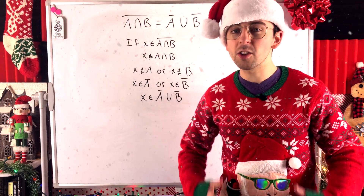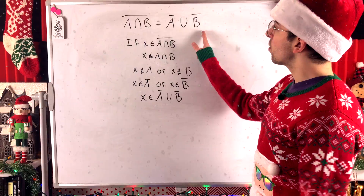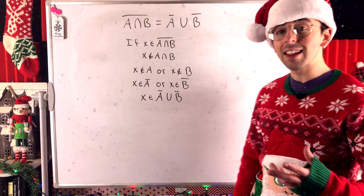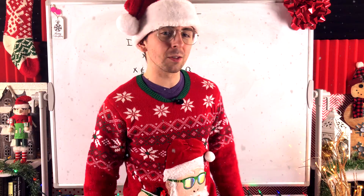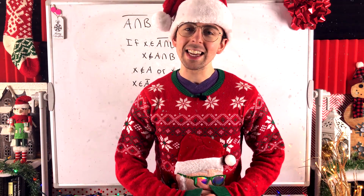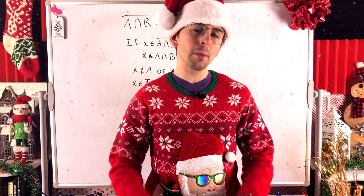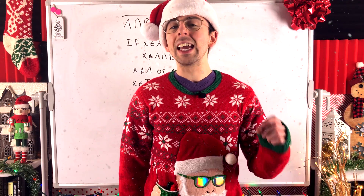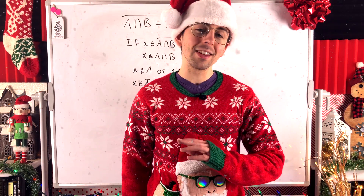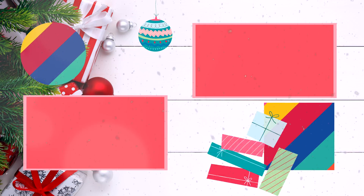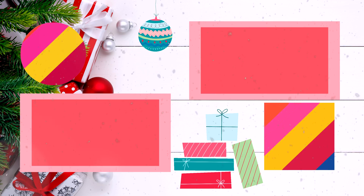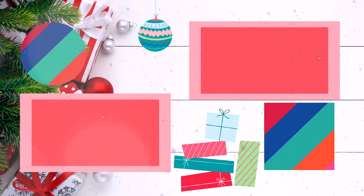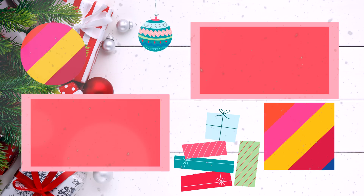So these two sets are subsets of each other, and by definition of set equality, they are equal sets. And that's how you prove DeMorgan's Laws for sets. I hope this video helped you understand the proofs. Let me know in the comments if you've got any other video requests. Thank you very much for watching — I'll see you next time, and be sure to subscribe for the jolliest math lessons on the internet.